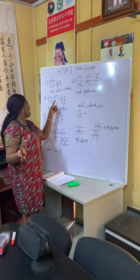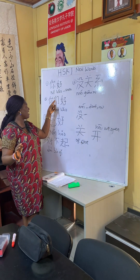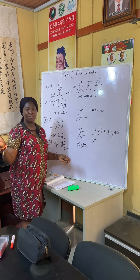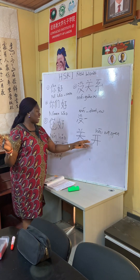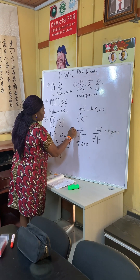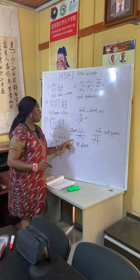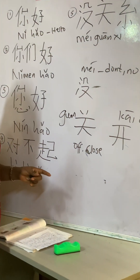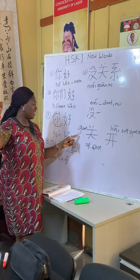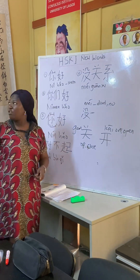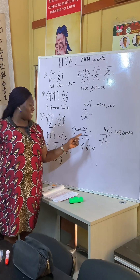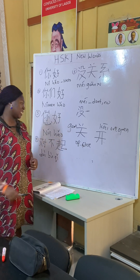So 开 and 关 are opposites: 开门 (kāi mén) — open the door; 关门 (guān mén) — close the door. 开灯 (kāi dēng) — on the light; 关灯 (guān dēng) — off the light. 开窗 (kāi chuāng) — open the window; 关窗 (guān chuāng) — close the window.